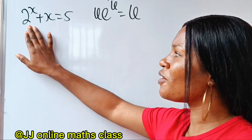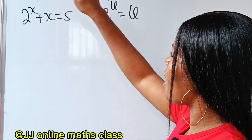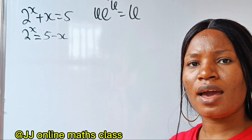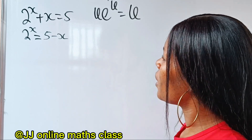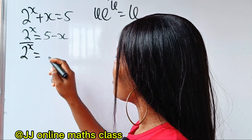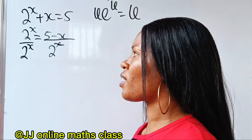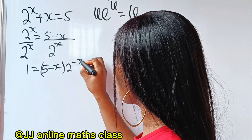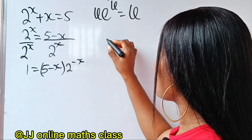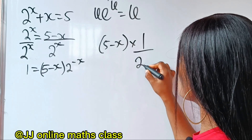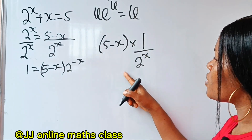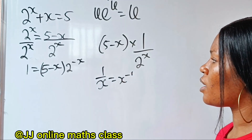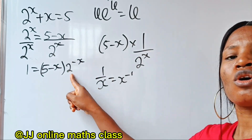First of all, let's leave this 2 to the power of x alone. Let's transfer the plus x to the other side. If we do that, we will have that 2 to the power of x equals 5 minus x. Now, let's divide both sides by 2 to the power of x. If we do that, we have 1 is equal to (5 minus x) multiplied by 2 to the power of minus x, because 1 over 2^x is the same as 2^(−x) by the law of indices.